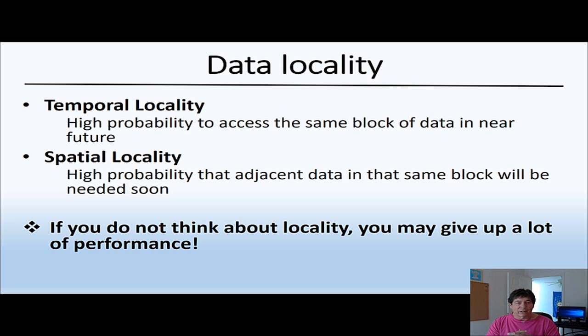Spatial locality has to do with location, where the data is. This is where when a high probability that adjacent data in the same block will be needed soon. So when you're programming, if you don't take these things into account, you may give up a lot of performance because you're not taking advantage of the cache.